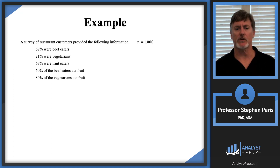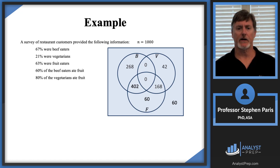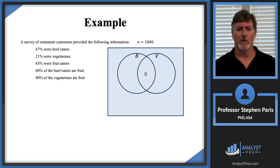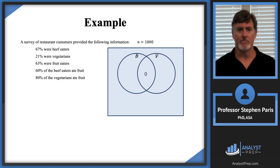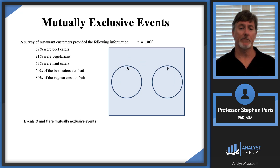Starting with 1,000, going through the list of numbers and separating how many people are in the different regions of the Venn diagram, you'll get this Venn diagram. I want to focus on the part where you have the zeros. The intersection of B and V is zero — that's kind of the definition of vegetarian, that they're not going to eat beef. So there are no outcomes in the intersection of B and V, and we would say that B and V are mutually exclusive events.